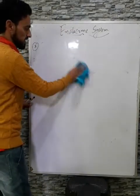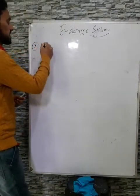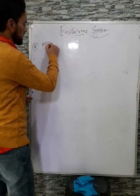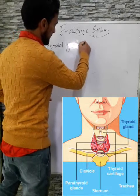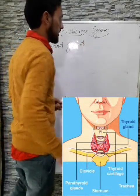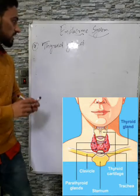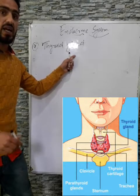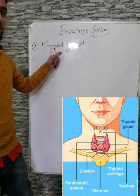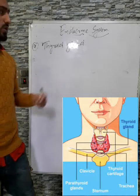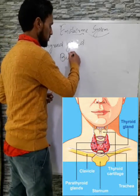The next gland of the endocrine system is the thyroid gland. This is the largest endocrine gland. As you can see on your screen, the thyroid gland has a bi-lobed structure — its shape resembles the letter H.